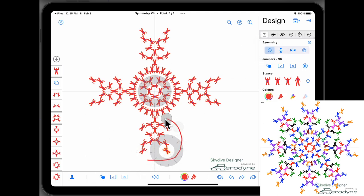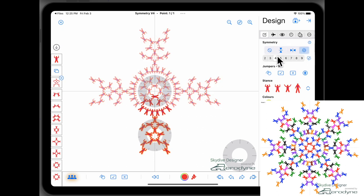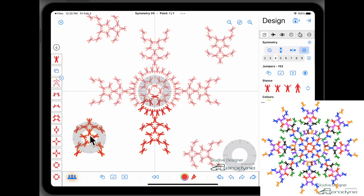Select these guys and make a copy of that formation. Then turn back on 4-way rotational symmetry. Drop this in the center.